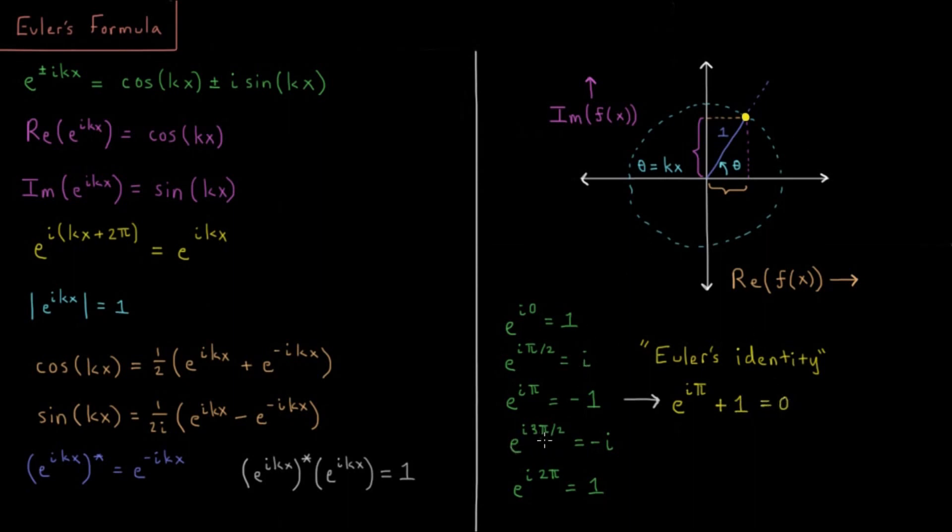Then at 270 degrees, 3π over 2 radians, we're down to the negative y axis, the negative imaginary axis, negative i. And finally, e to the i 2π is 360 degrees, we're back on the plus x axis at plus 1.